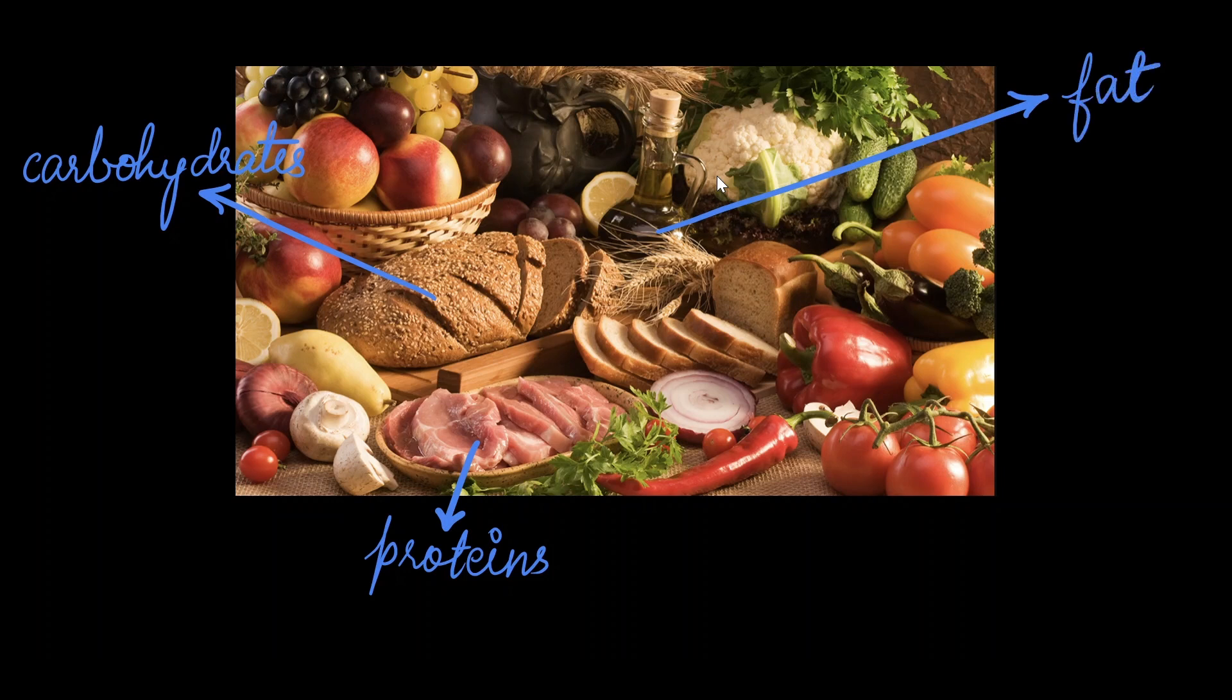What we see here are foods that represent different sources of energy. The bread that you see here is a source of carbohydrate. The meat represents protein sources, while the oil here are sources of fat. The fruits and vegetables are sources of fiber.